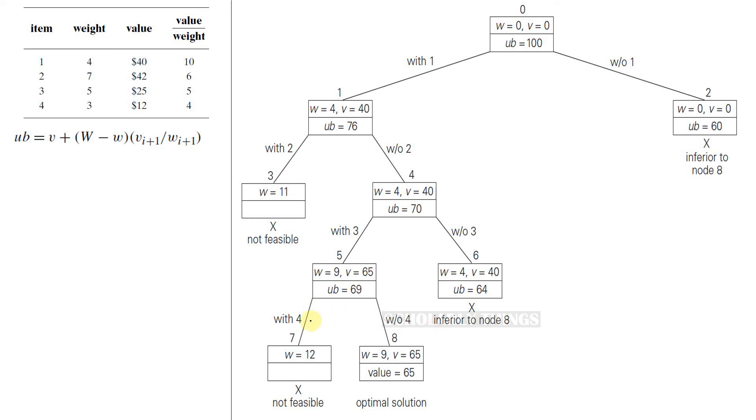Next check for with and without item number 4. If we include 4, the weight will be 4 plus 5 plus 3, that is 12. This is greater than the knapsack capacity. So it is not feasible. Let's try without 4. Without 4 it means that we are including item number 1 and item number 3. So the total weight will be 9 and the total value will be 40 plus 25, which is 65. Let's see the upper bound: value is 65 plus 10 minus weight is 9, value by weight ratio for next item is 0 because that's the end of it. Therefore the upper bound will be 65. This is the optimal solution. Node 8 has given us the optimal solution. The final selection is item 1 and item 3. Total weight will be 9 and the total value will be 65.